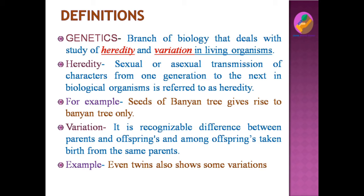For example, the seeds of a banyan tree will always give rise to a banyan tree only, not any other type of plant. This is the mechanism of heredity — the same organism will produce the same type of organism. This is called heredity.